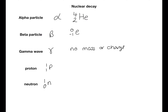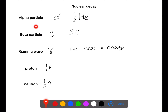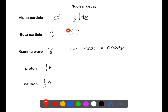Here we have the different particles that we need to be familiar with for nuclear decay. The first is the alpha particle, which can be represented with the alpha symbol or as the nucleus of helium, which has a mass of four and an atomic number of two. We then have the beta particle, which has the beta symbol or it can be represented as an electron, which has a mass of zero and an atomic number of minus one.